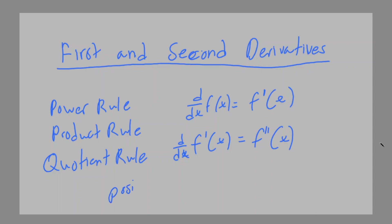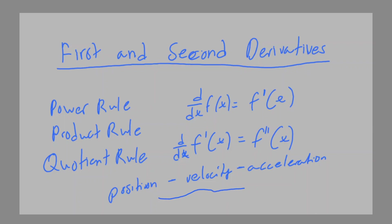One way you could visualize or understand it is to remember that f(x) could be like a position graph, f'(x) could be like a velocity graph, and f''(x) is like an acceleration graph. In physics and math likewise, this is a pretty good way of understanding first and second derivatives, as well as the function value.